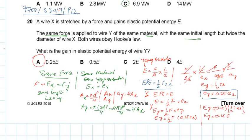This question covers Young's modulus and Hooke's law. Wire X is stretched by a force and gains elastic potential energy E. The same force is applied to wire Y of the same material with the same initial length but twice the diameter of wire X. Both wires obey Hooke's law. What is the gain in elastic potential energy of wire Y?